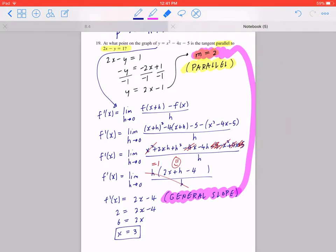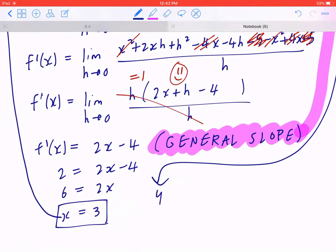Again, to find a point, you have to go back and find y. You have to plug it back to f of x, which means y equals 3 squared minus 4 times 3 minus 5. This will give you 9 minus 12 minus 5, which is negative 8.